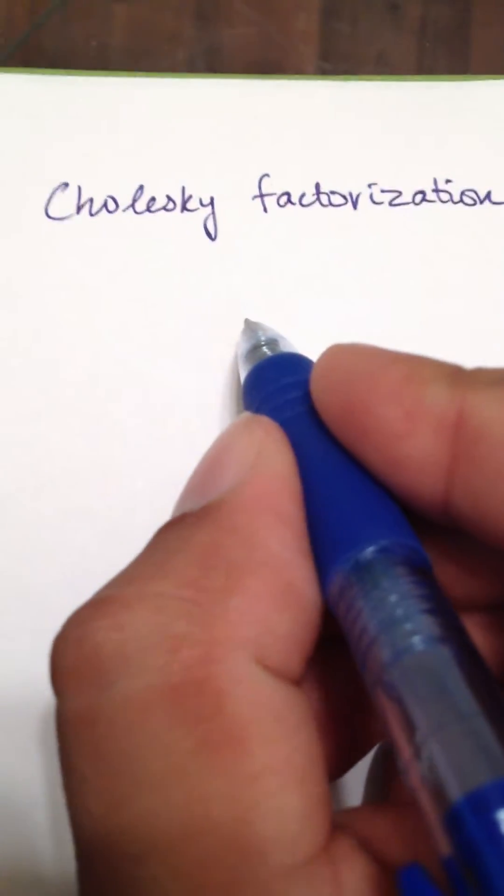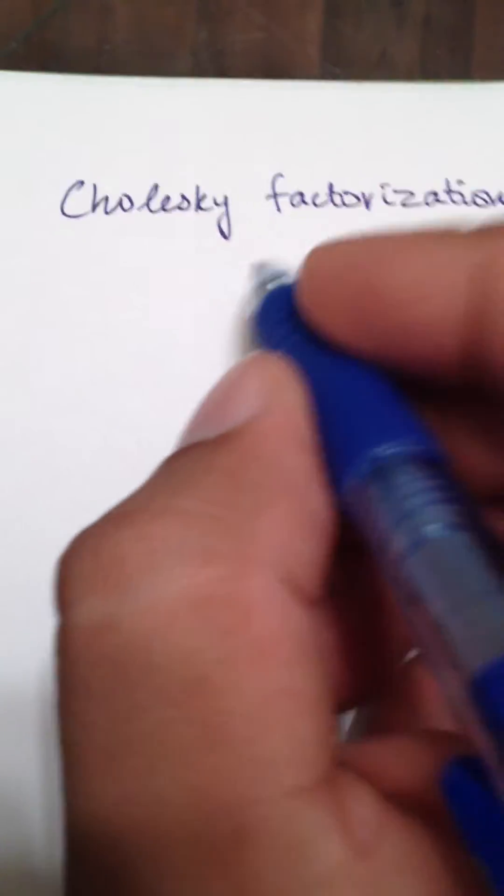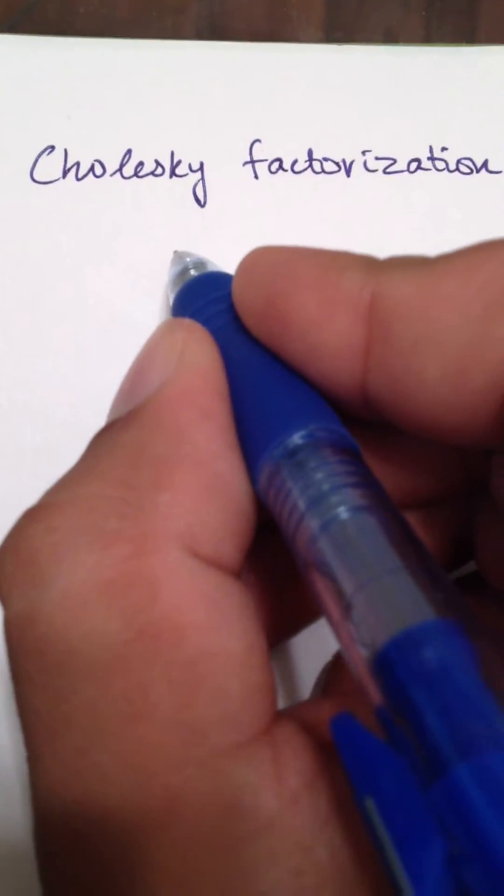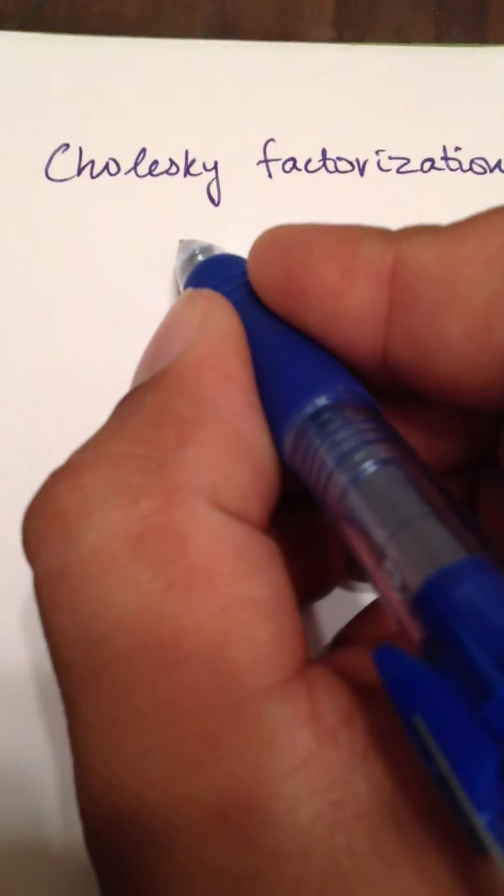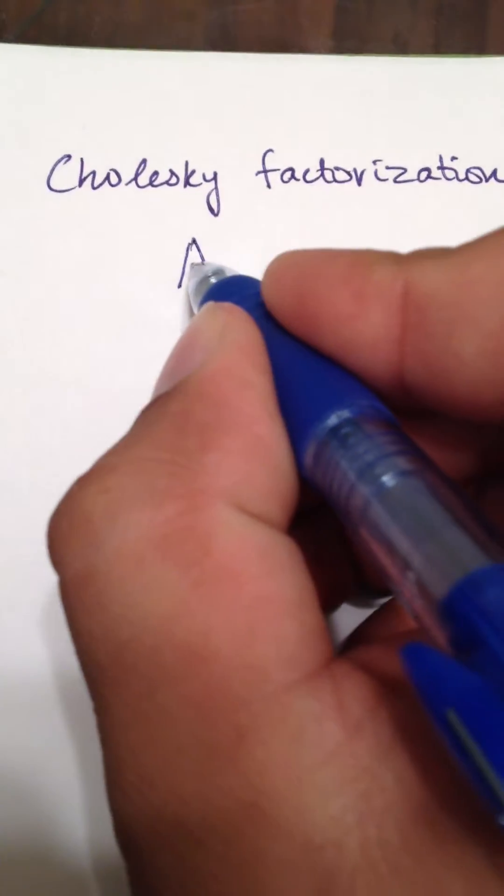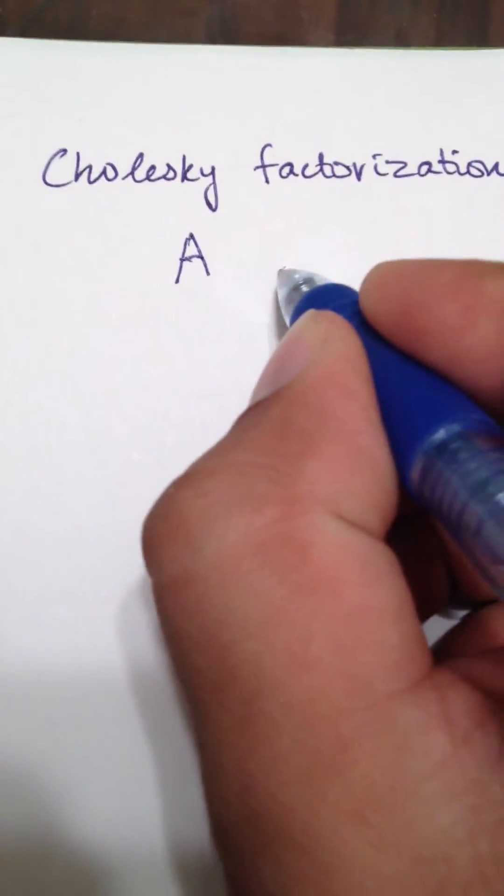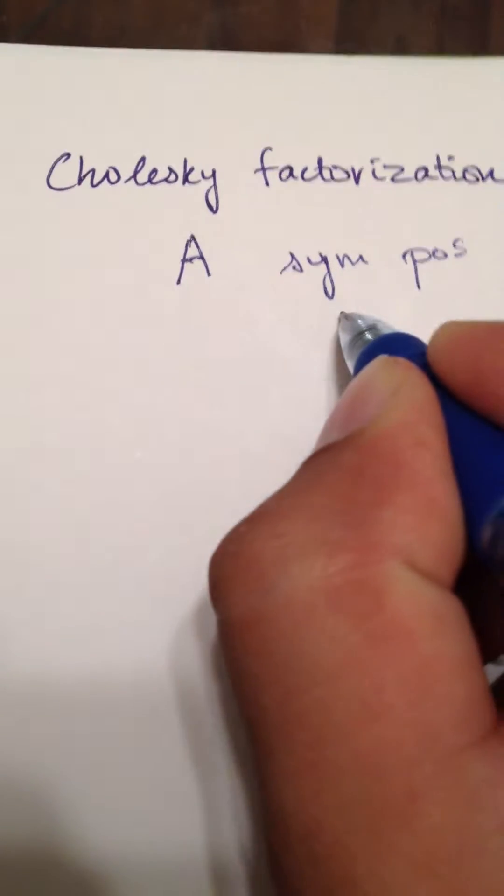In this video, I'm going to show you about Cholesky Factorization. For doing Cholesky Factorization, we start with a matrix A, which is going to have to be symmetric positive definite.